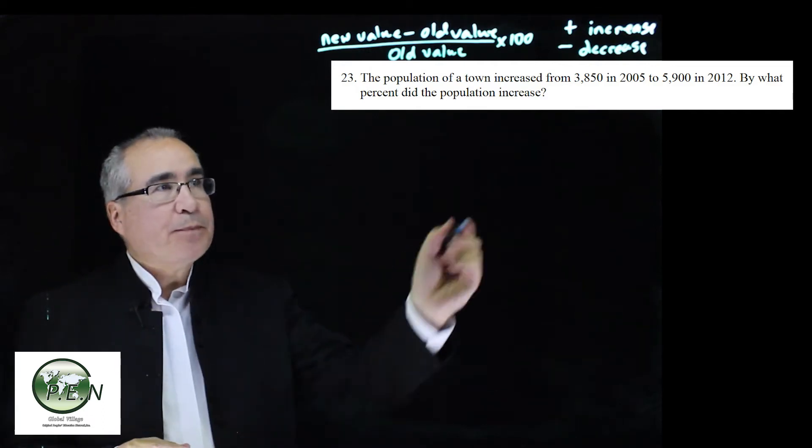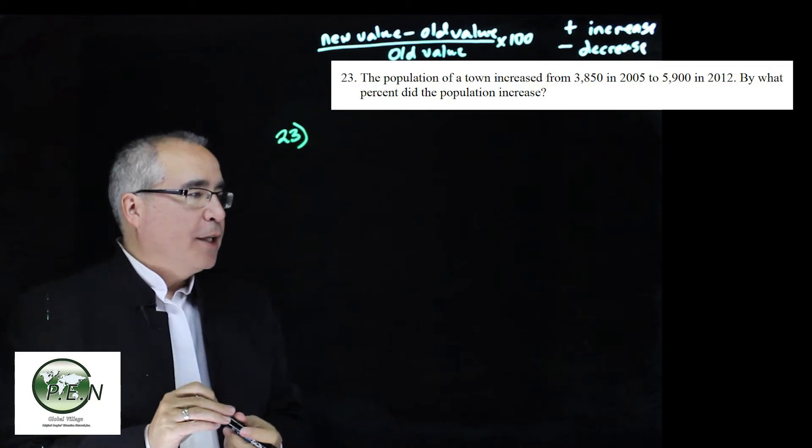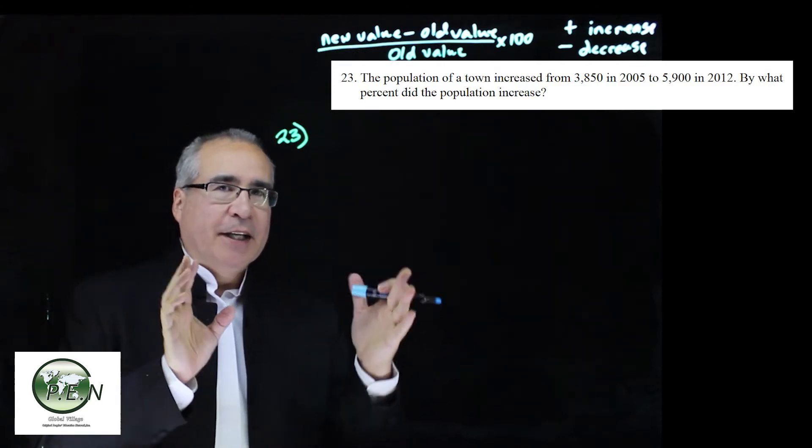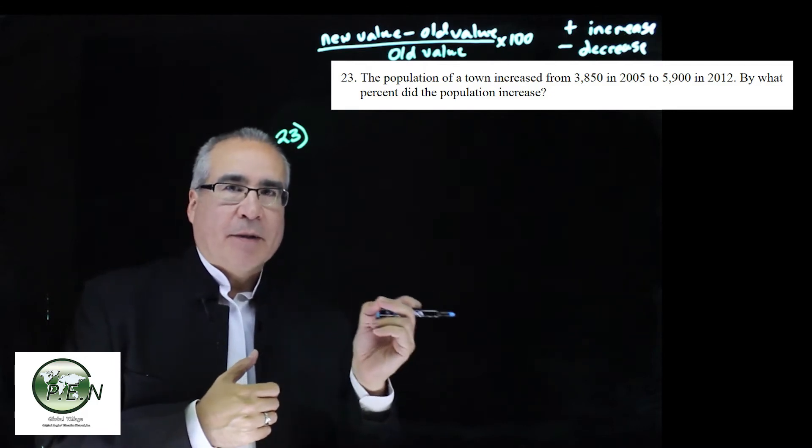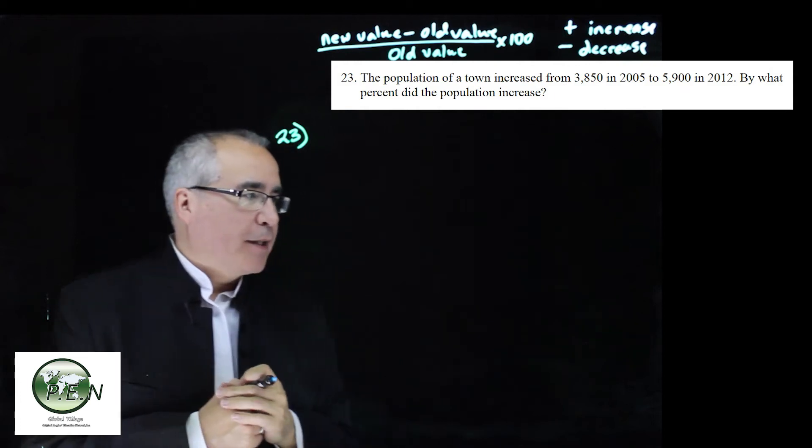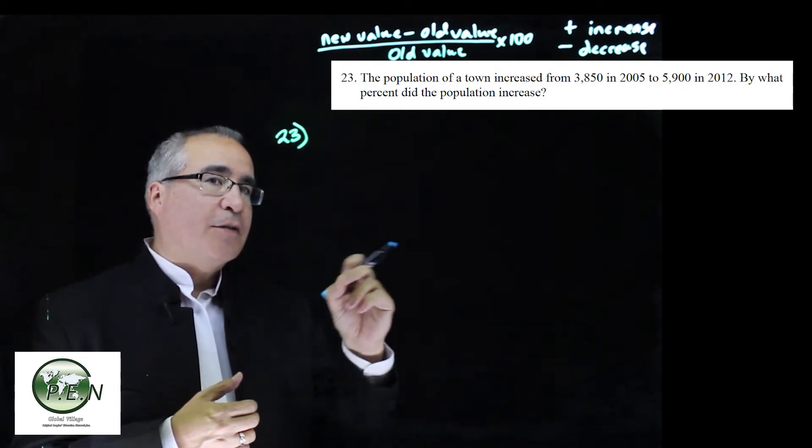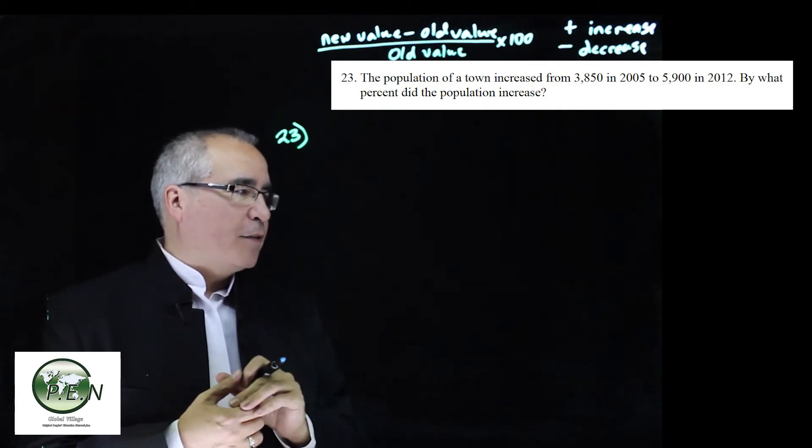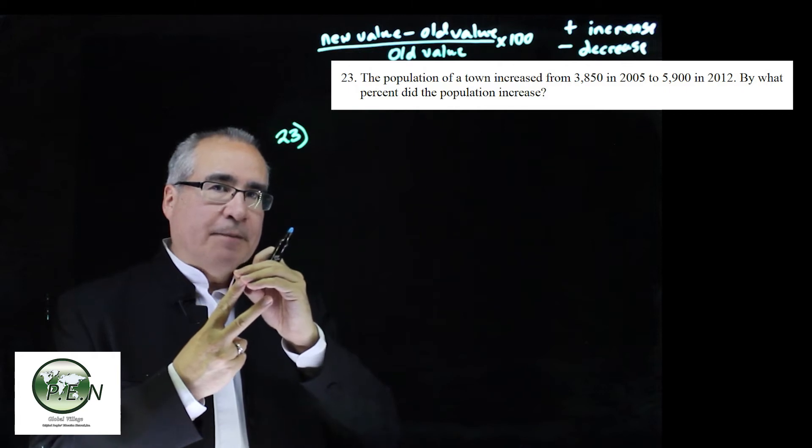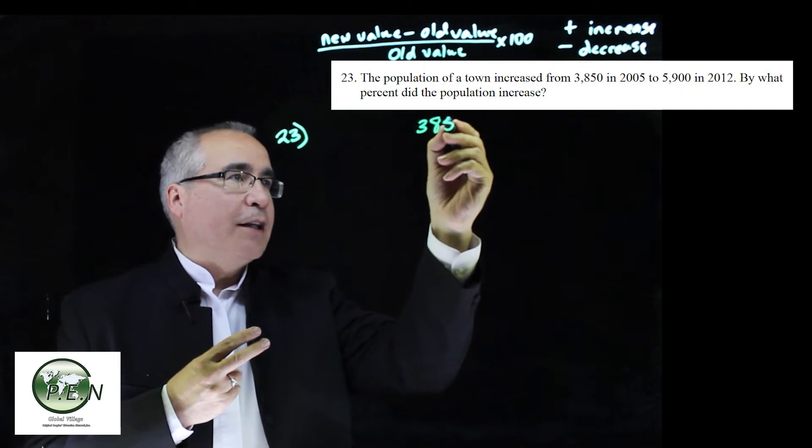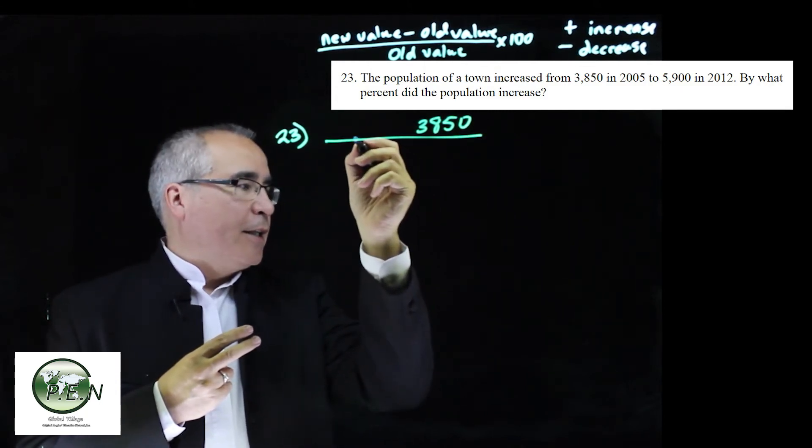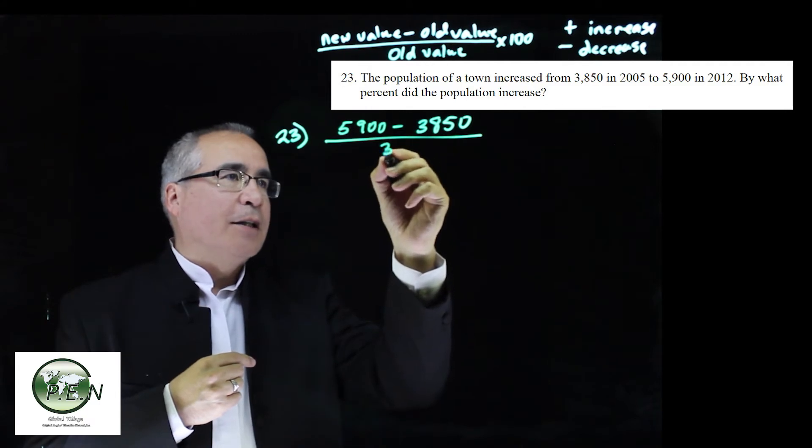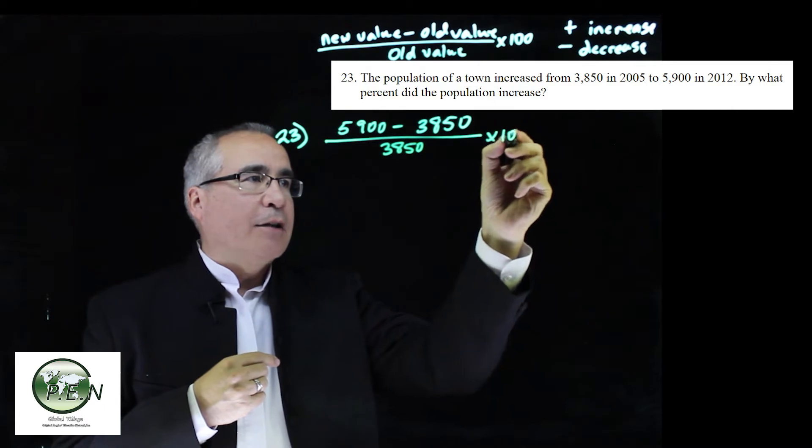So here's 23. In 23, now remember in these ones, percent change, there's going to be two time periods. There's going to be an old time and a new time. We're going to take those numbers and that's really all we need. Because the 100 is always going to be there and our result is going to be a percentage. So we've got a population of a town and we're told it's increasing, so we know we should have it positive, that's helpful. We went from 3,850 in 2005 to 5,900 in 2012. The numbers we're interested in is the population changing. Which one's the old one? 3,850 because that was 2005. Which one's the new one? 5,900 because that was 2012.